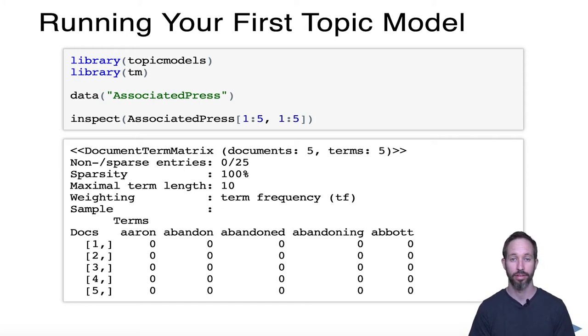It's become a popular dataset for running topic models and all sorts of other natural language processing analyses. The first thing I want you to see is what the data looks like. We have in this package not actually the full text of the documents themselves. Instead, we have what I described earlier, the document term matrix.